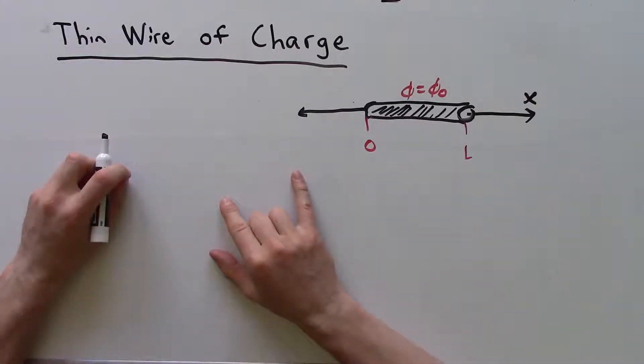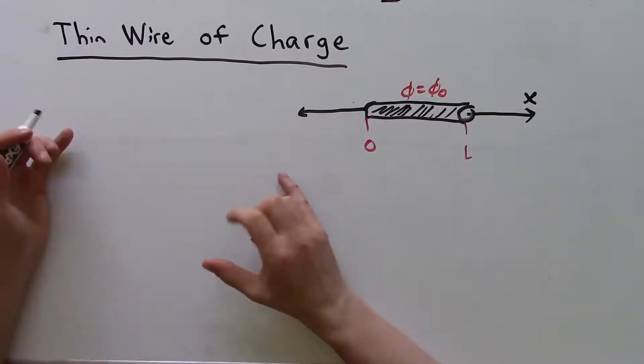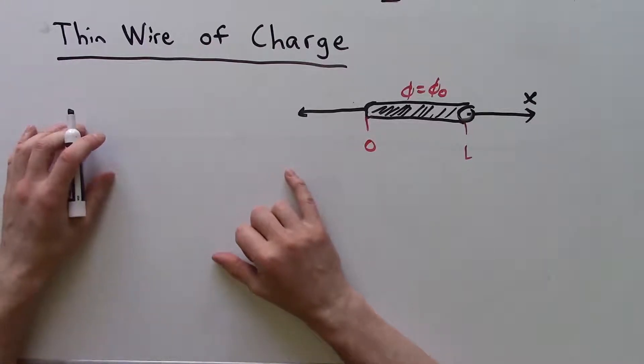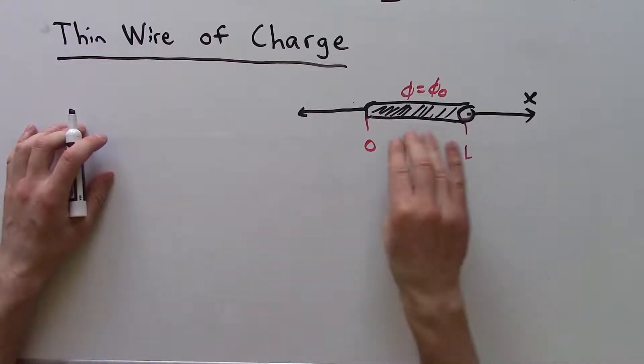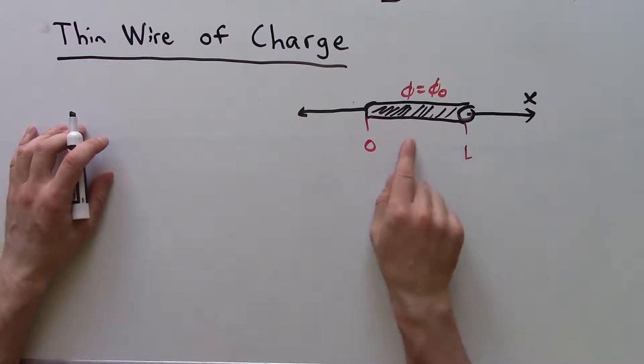So now let's continue our discussion from before, where we introduced Coulomb's Law in its most general sense. We're going to calculate the charge density, the charge distribution, along a thin little wire of metal.